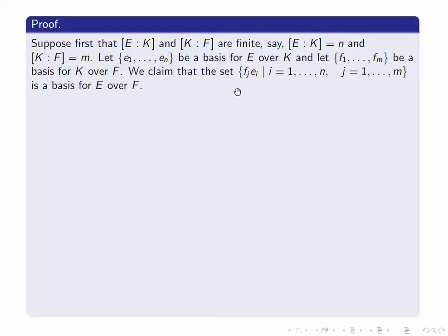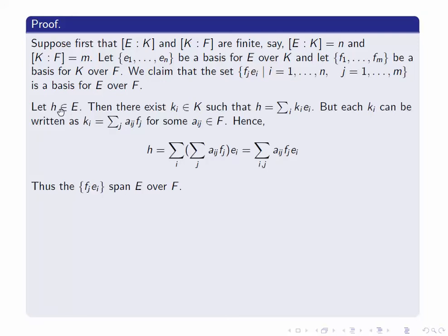Remember, in order to prove that something's a basis, we have to prove two things: that it spans the vector space and that the set is linearly independent. So we do these two things in order as usual. First, let's show that it spans E over F.